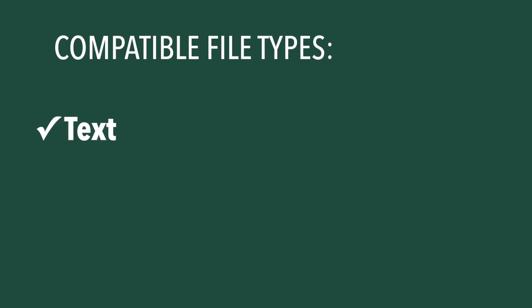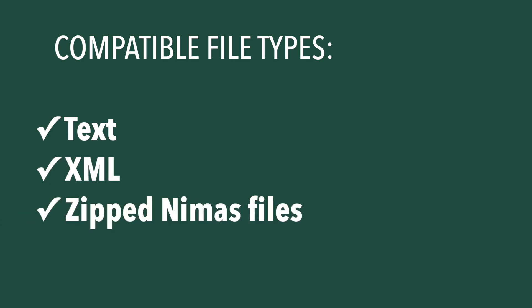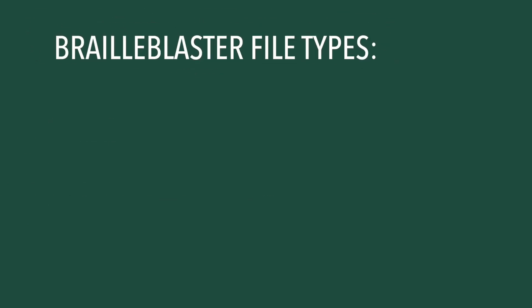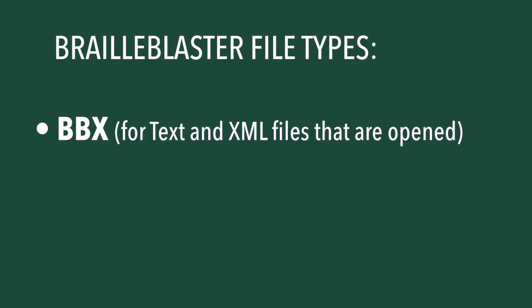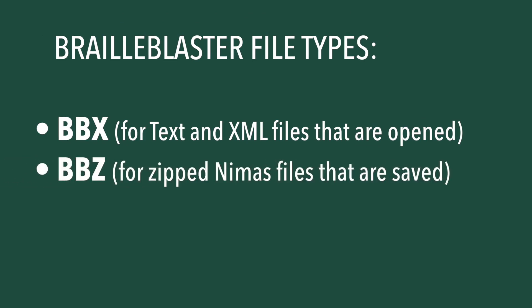To begin, let's talk about file types. Text, XML, and zipped NIMAS files can be opened with BrailleBlaster. These files are converted to file types specific to this software. BBX converts text and XML files when you open them, and BBZ converts zipped NIMAS files when you save them. BBZ files also save all the images from the zipped folder in the saved file set, which allows the image describer in BrailleBlaster to display each actual image instead of the image file path.